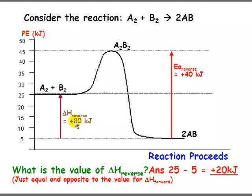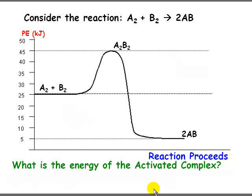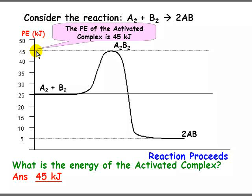You'll notice that delta H reverse is equal and opposite to delta H forward. Another question they might ask is: what is the energy of the activated complex? The activated complex is the species at the top of the graph, and its energy is simply 45 kilojoules — not the energy to get from the reactants to it, but its actual potential energy. The potential energy of the reactants is 25, and the potential energy of the products is 5.